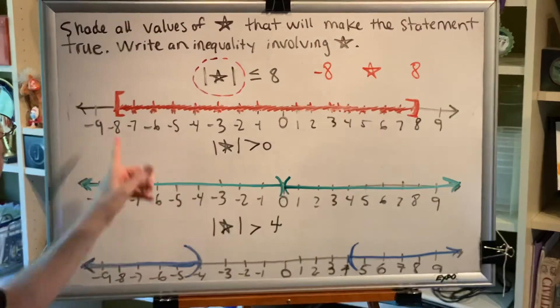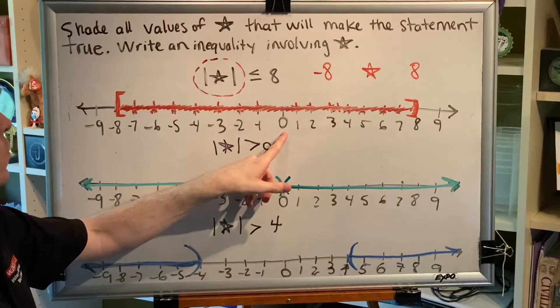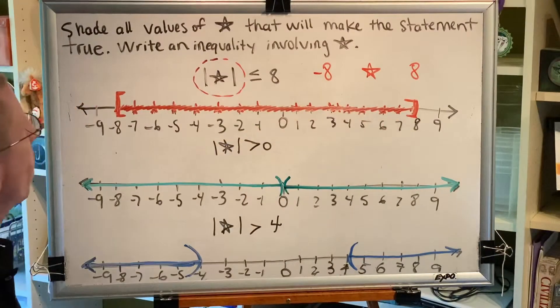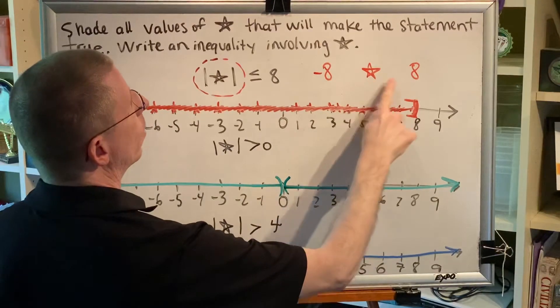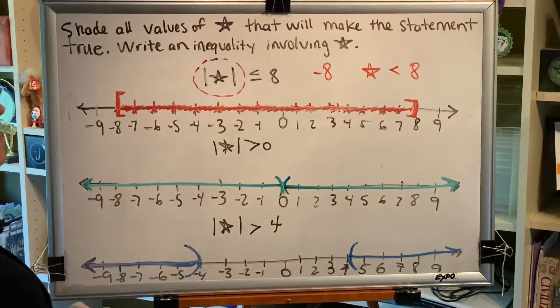Now star could be any number between negative 8 and 8, but allowing us to pretend that it's 0 for just a moment tells us what kind of inequality symbols we should put here. If this was a 0, what would be bigger? 0 or 8? The answer is 8. So we would put this kind of inequality symbol.